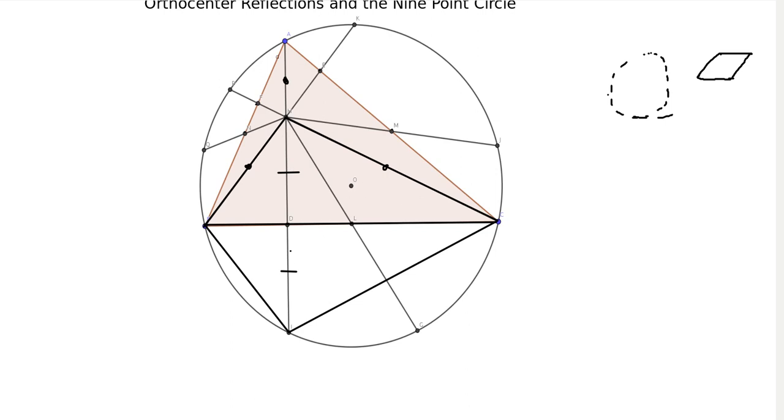So these two triangles sort of look, they look like they've been flipped over. And so that's what we want to set out and prove.